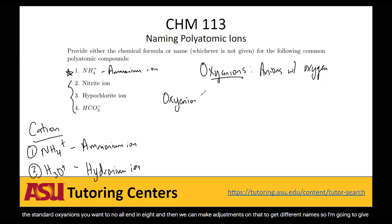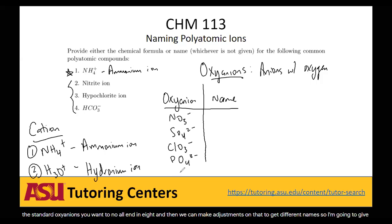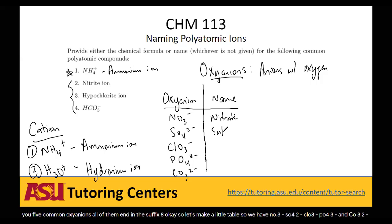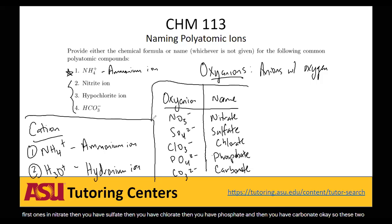Let's make a little table. We have NO3- (nitrate), SO4²- (sulfate), ClO3- (chlorate), PO4³- (phosphate), and CO3²- (carbonate). These two cations and these five anions are the only ones I'm requesting you to memorize. It will help you tremendously in chemistry — memorize these. Once you have these seven, you're going to be able to derive the rest of them.